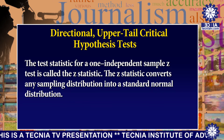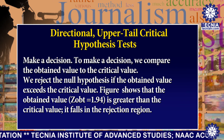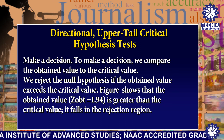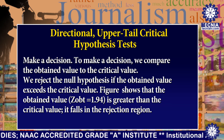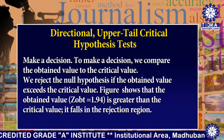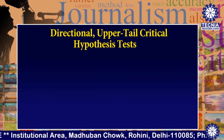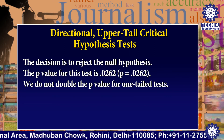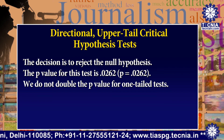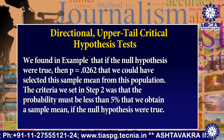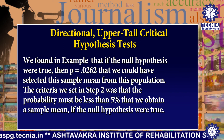Now I am explaining Step 4. In Step 4 we will make a decision. To make a decision we compare the obtained value to the critical value. We reject the null hypothesis if the obtained value exceeds the critical value. The figure shows that the obtained value Z obtained equal to 1.94 is greater than the critical value; it falls in the rejection region. The decision is to reject the null hypothesis. The p-value for this test is 0.0262. We do not double the p-value for a one-tail test. If the null hypothesis were true, p equal to 0.0262 is the probability that we could have selected this sample mean from the population.